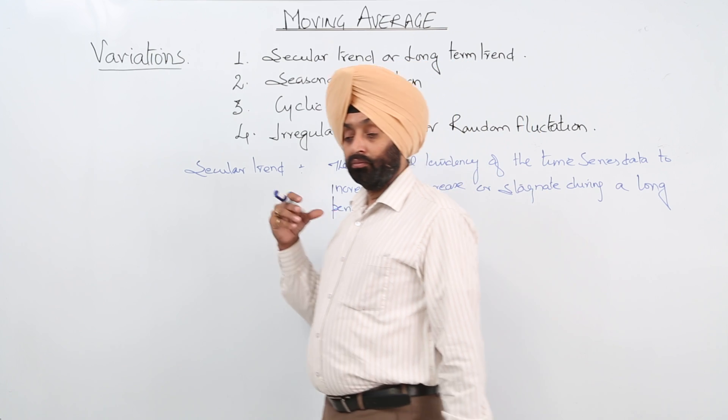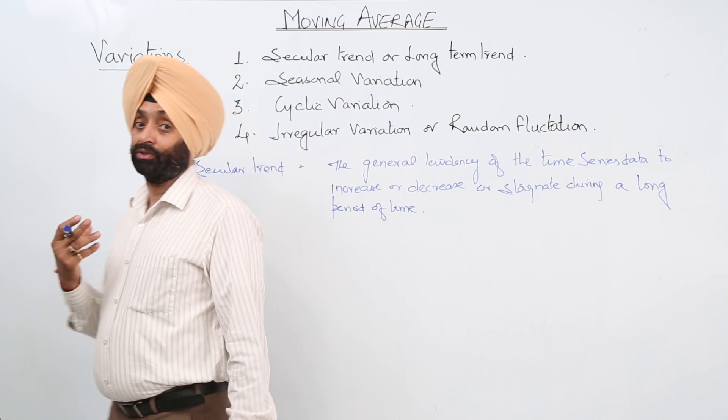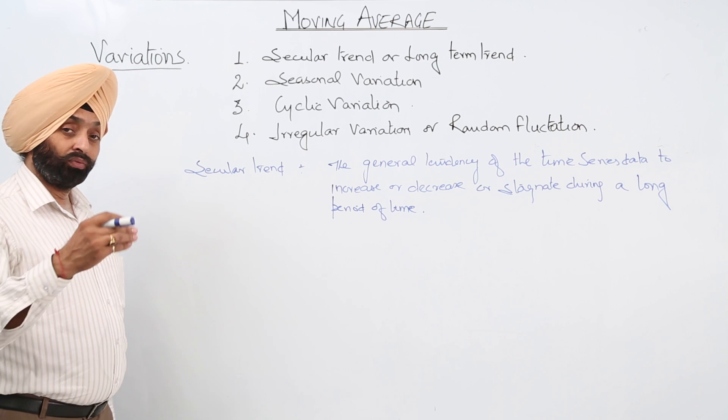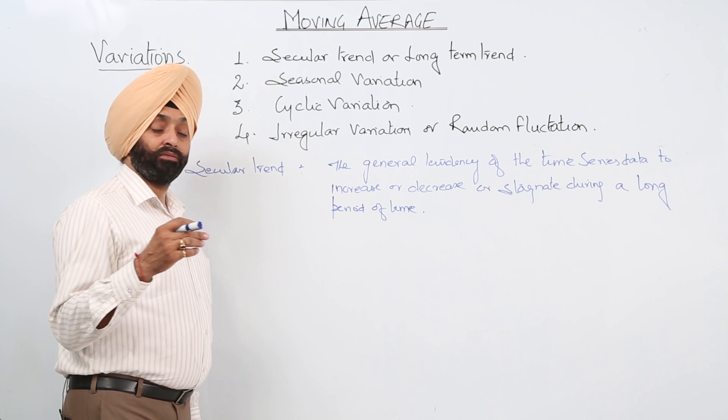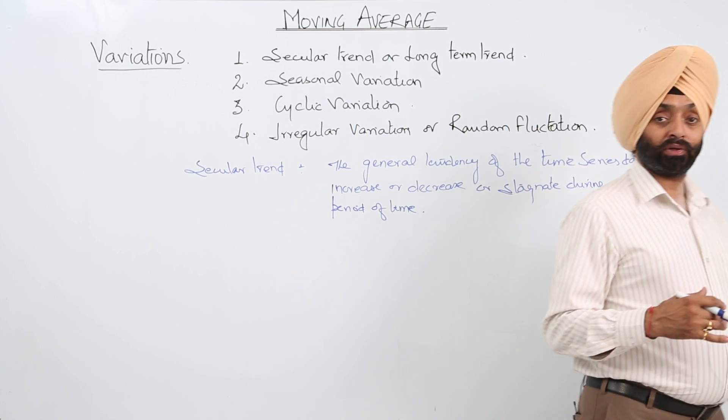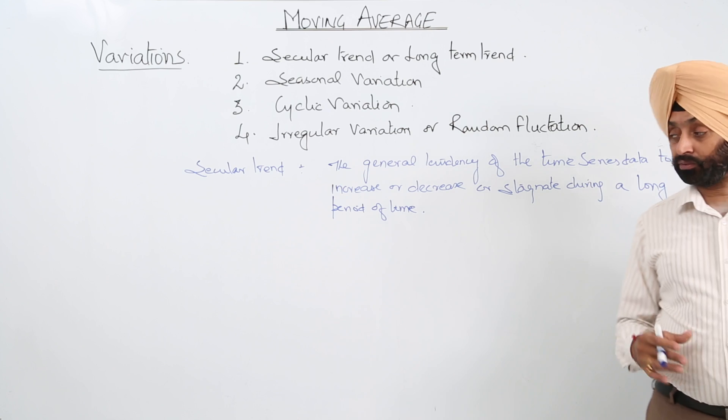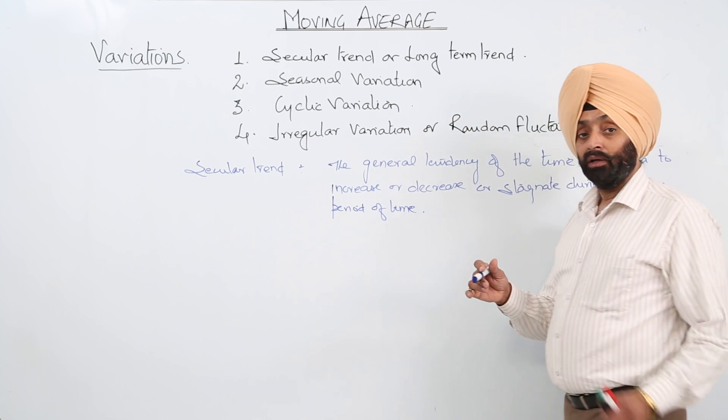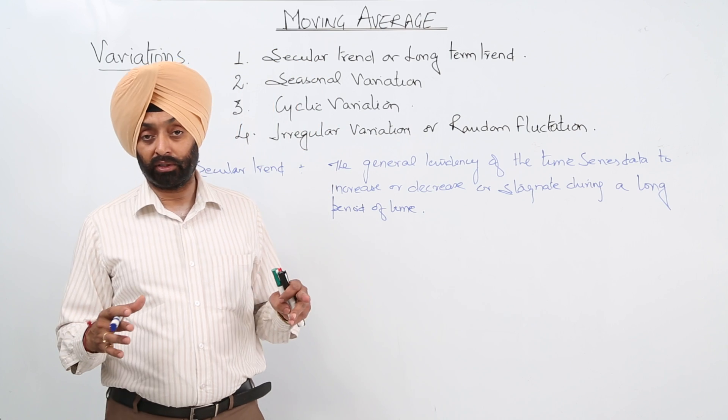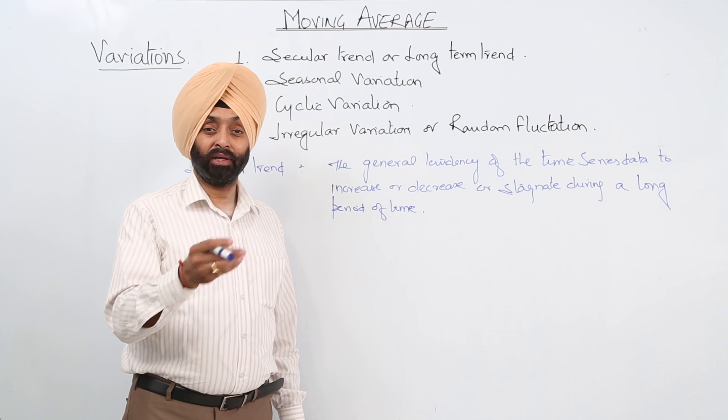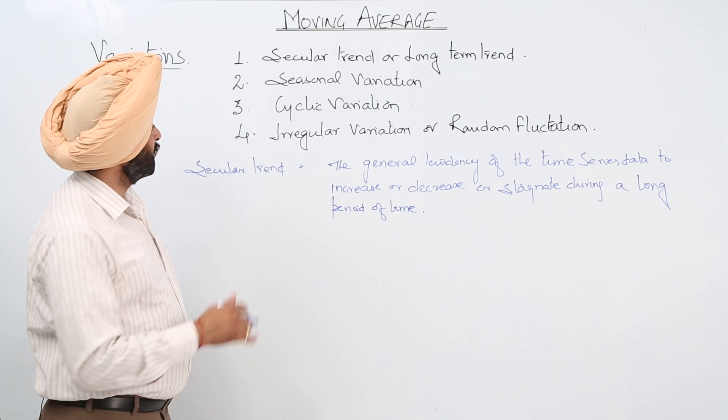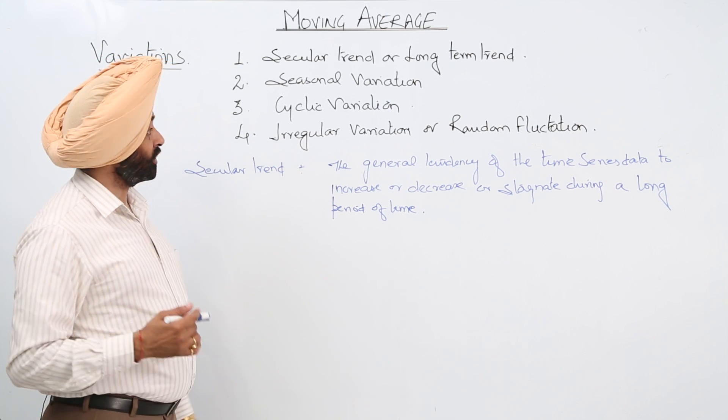Then we can have, what about the decreasing part? Now due to the very efficient efforts from the government side, in our country one of the major diseases in the small kids that was polio. With the appreciable efforts of the government that has been vanished from our country. Hardly one percent will be there. That was a decrease. So this is a secular trend or a long term trend. Then we are having seasonal variation.